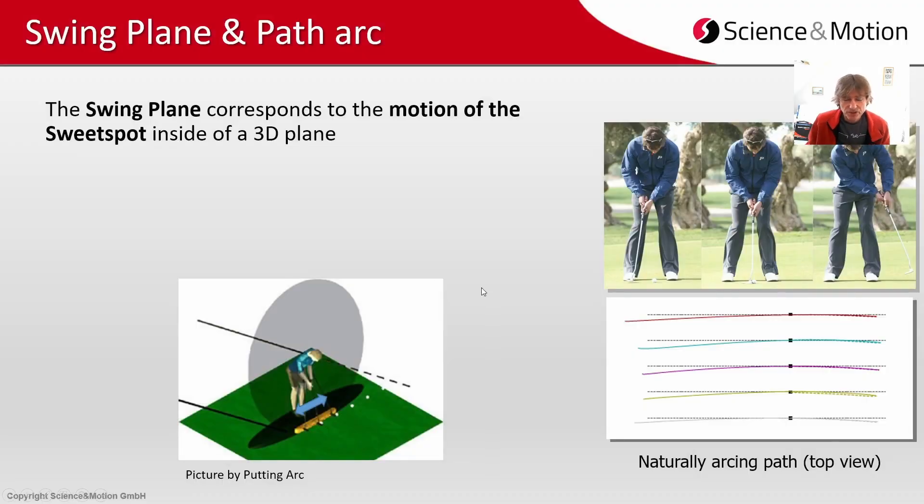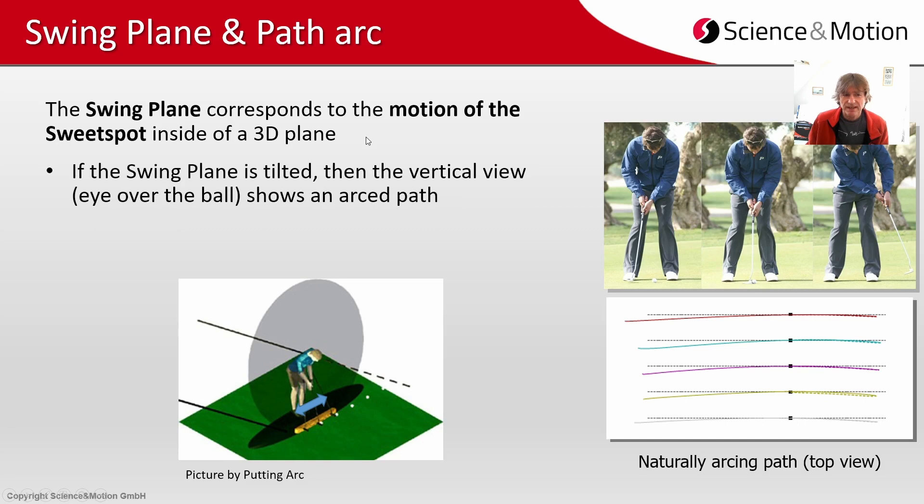Now per definition the swing plane corresponds to the motion of the sweet spot of the putter inside of a 3D plane. And if this swing plane is tilted then a vertical view with the eye over the ball down to the path will show some arc. The more this plane is tilted the more the path will appear to be arced against the target line.